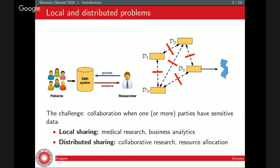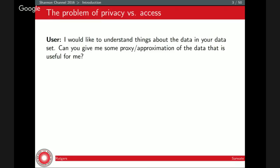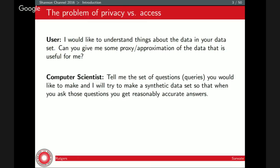Multiple research groups studying the same disease, for example, needing to share data. Or problems in resource allocation where they need to collectively make some decision. One way of phrasing this is privacy versus access — the data is private, but we want to provide some access. The person who wants to use the data perhaps wants statistical information, or a proxy or approximation of the data that's useful for them.